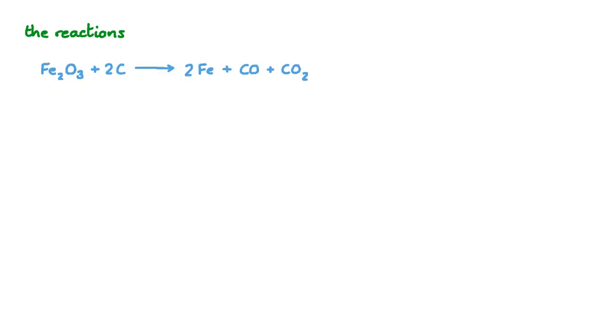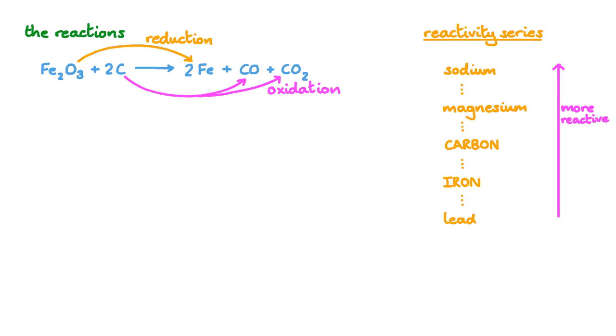When hematite is reacted directly with carbon, a redox reaction can occur. Hematite, Fe2O3, is reduced to iron. And at the same time, carbon is oxidized to a mixture of carbon monoxide and carbon dioxide. The exact stoichiometry will depend on the conditions. If we look at the reactivity series, we're reminded that carbon is more reactive than iron. So, when we heat iron oxides with carbon, the oxygen passes from the iron to the carbon.